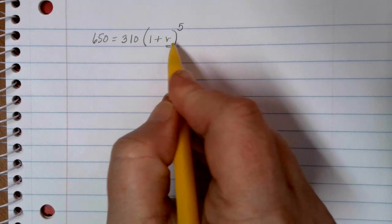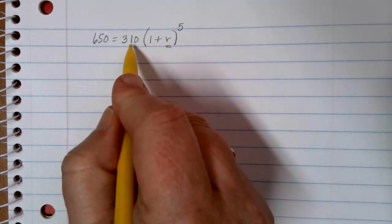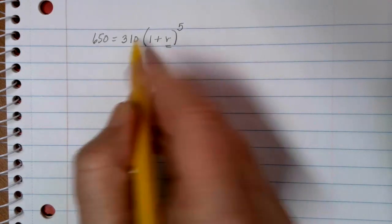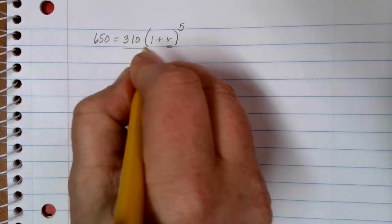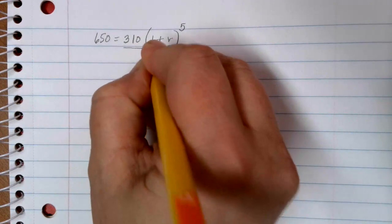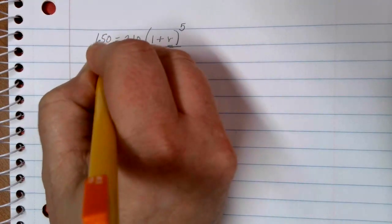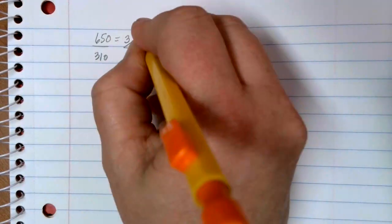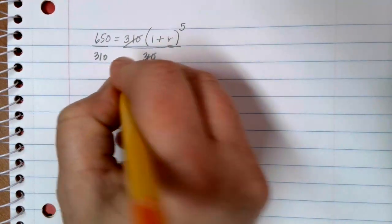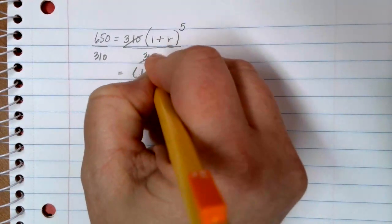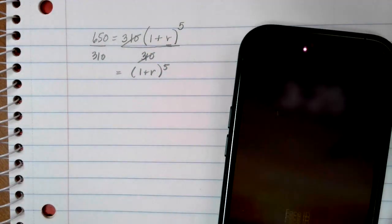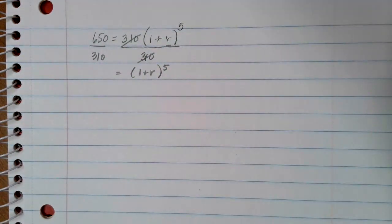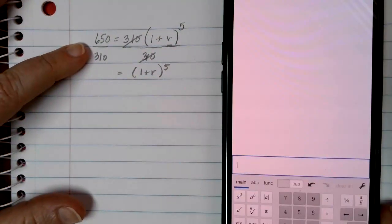If we're undoing things, we want the thing that's farthest away from the R. In this case, that's this 310 that's being multiplied. Because it's being multiplied, I can get rid of it by dividing on each side. On the right-hand side, the 310s go away, and I'm left with just 1 plus R to the 5th power. And then I need to divide 650 by 310.